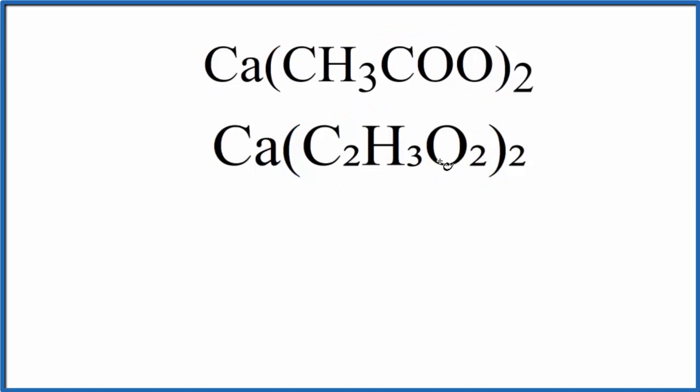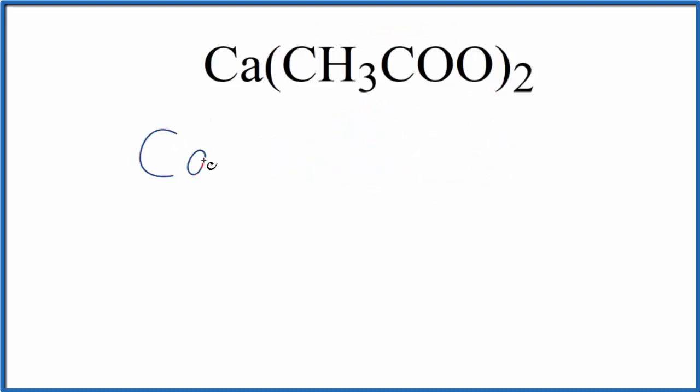So we'll go with the first one here, and we'll start by writing the element symbols. So we have calcium, Ca, carbon, hydrogen, and then oxygen. So these are the atoms we have in calcium acetate.